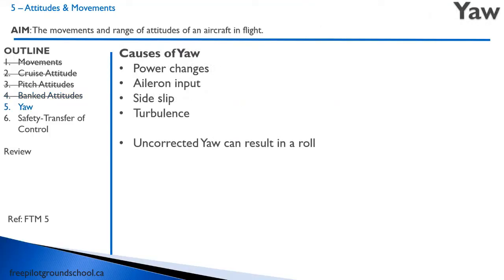Lastly, let's talk about the causes of yaw — other than actually yawing the aircraft with the rudder pedals. Yaw can be caused by power changes: adding throttle will increase or decrease the slipstream and torque on the airframe and will change the yaw. Aileron input may also cause yaw, as can side slip or turbulence. And if we don't correct for yaw, we can end up in a roll. So we want to make sure that we control yaw with our rudder pedals. Your instructor will demonstrate this to you in flight.